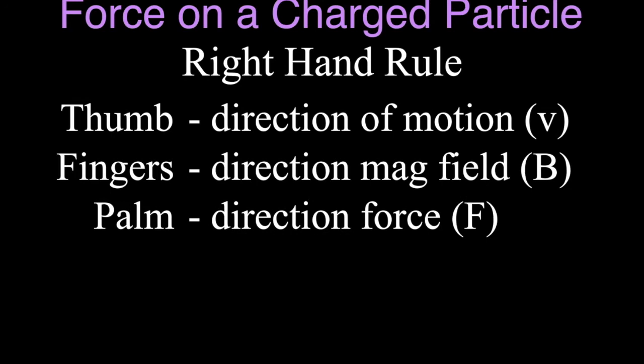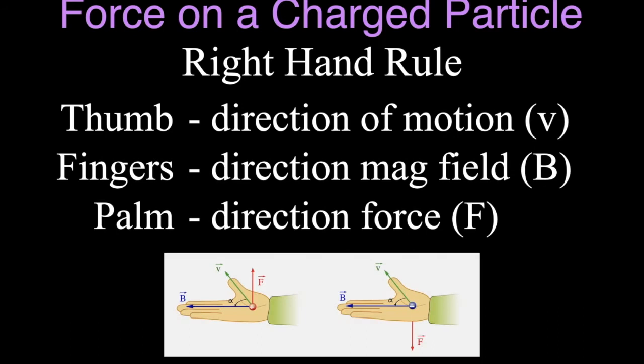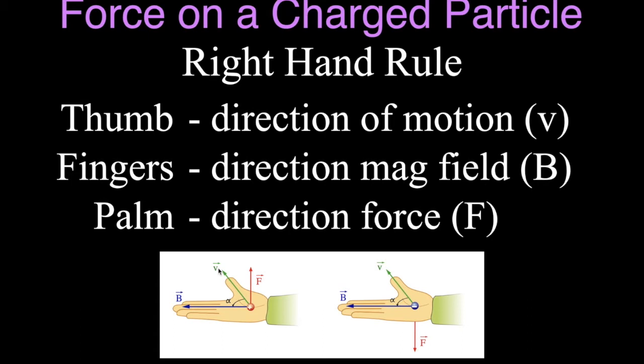Your palm is the surface — it doesn't really point like your fingers or your thumb do, but you can kind of push with your palm in the direction of the force. Here's a simple diagram showing your right hand: the thumb is the direction of velocity of the charged particle, your fingers indicate the direction of the magnetic field, and your palm pushes in the direction of the force. This right-hand rule is used for positively charged particles.